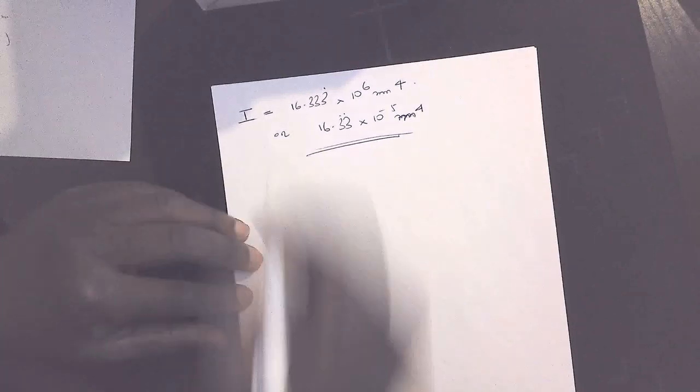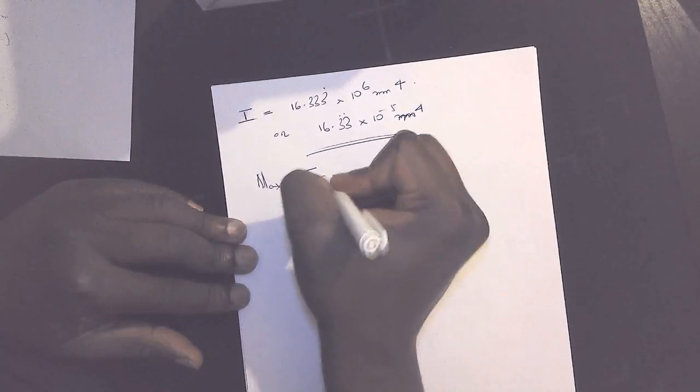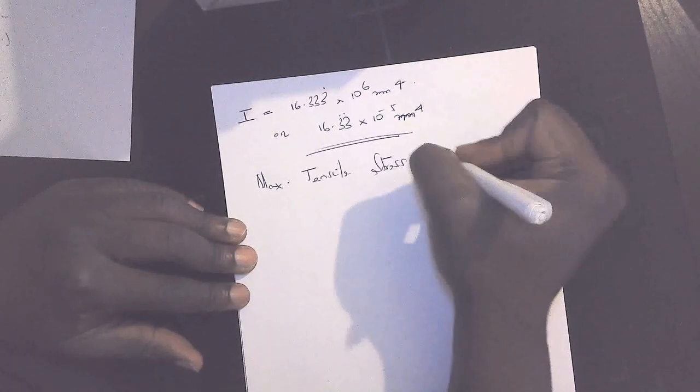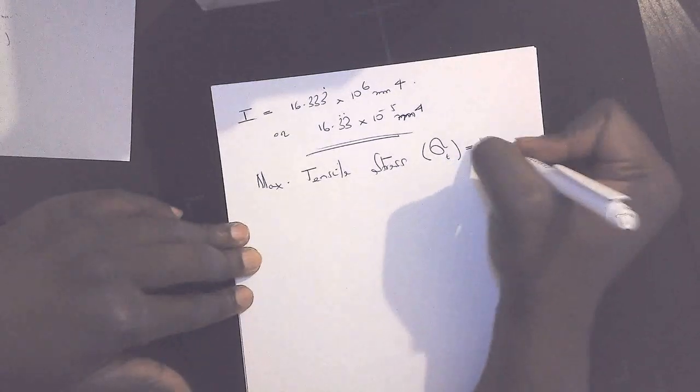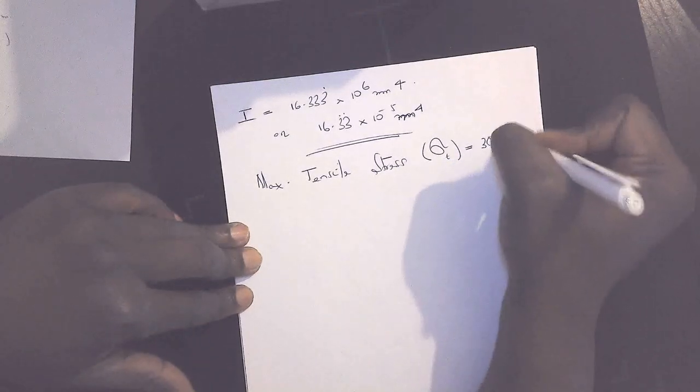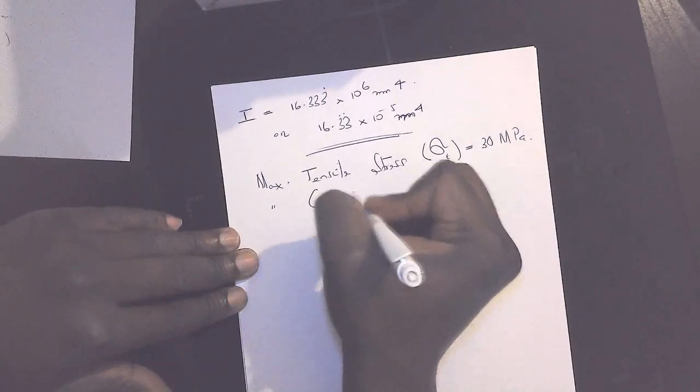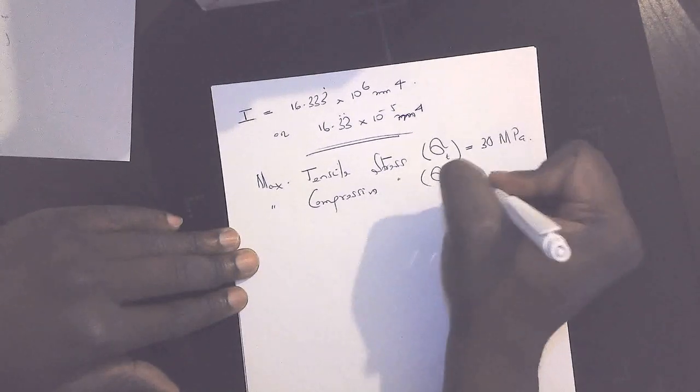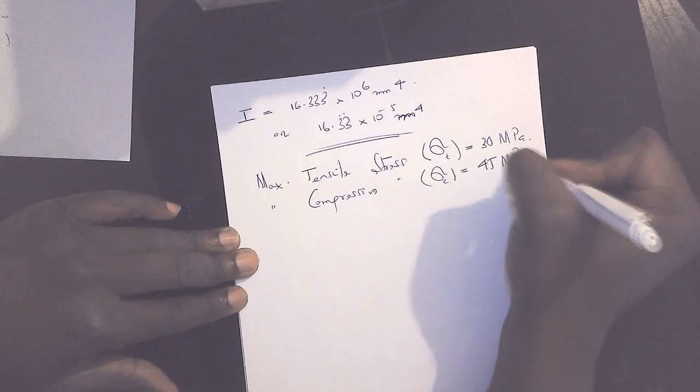Going back to the question, we'll get some information that the maximum tensile stress sigma T measures at 30 MPa, and the maximum compressive stress sigma C is given at 45 MPa.